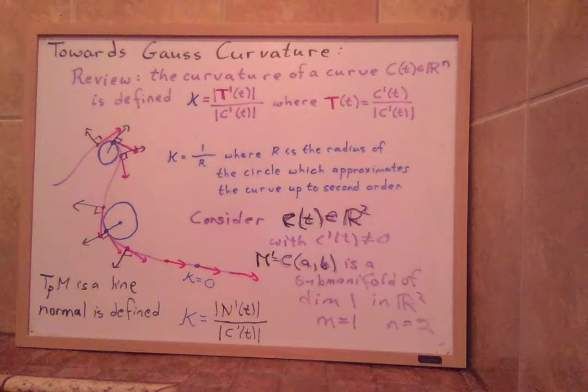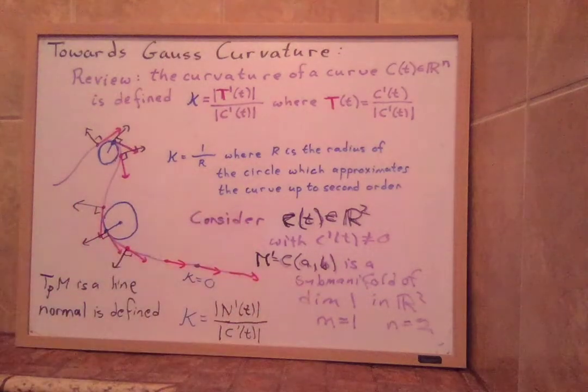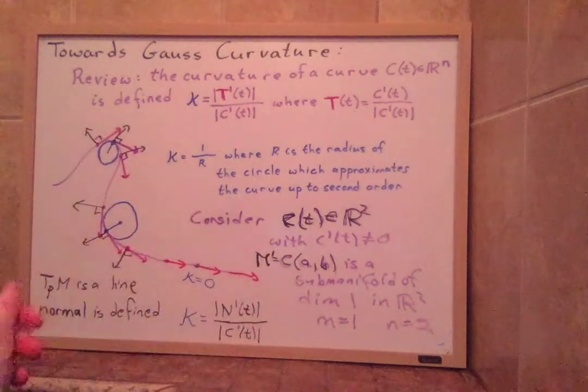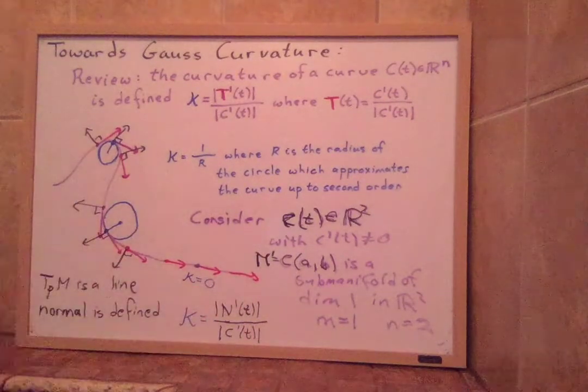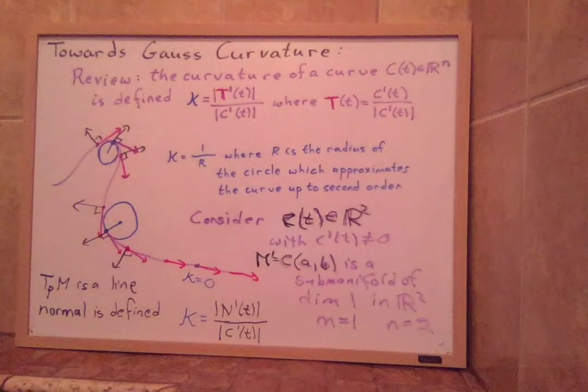All right, so that's an interesting fact that we're going to build on because now what we want to talk about is what if M is a two-dimensional submanifold inside a three-dimensional space. Then we want to understand about the movement of the normals in order to define our curvature. So I'll take a little break here so we can redraw everything and move on.